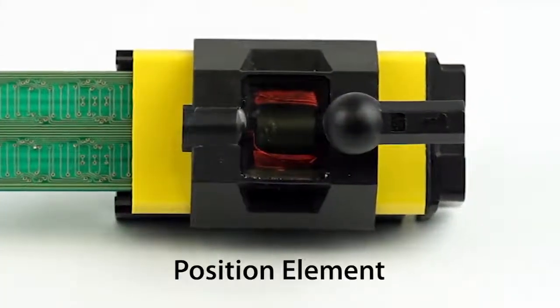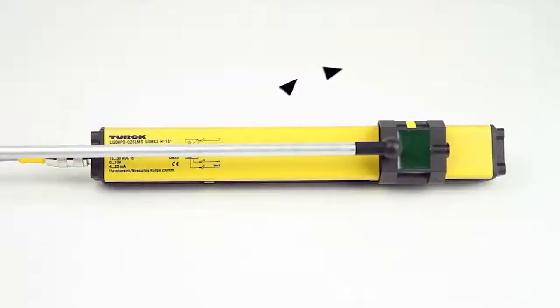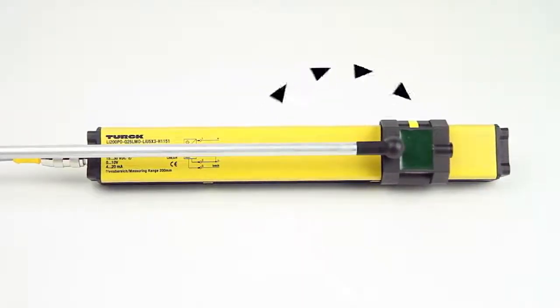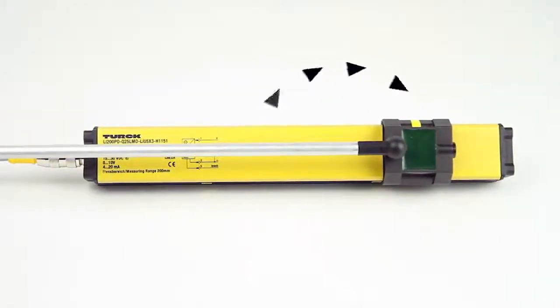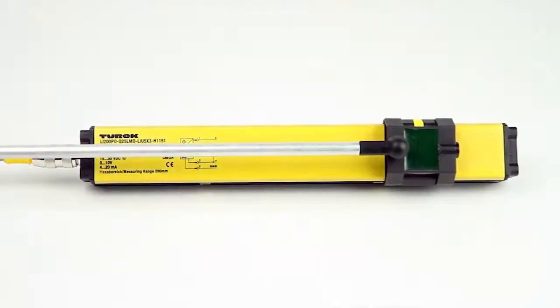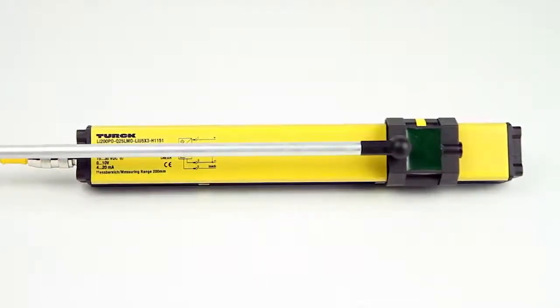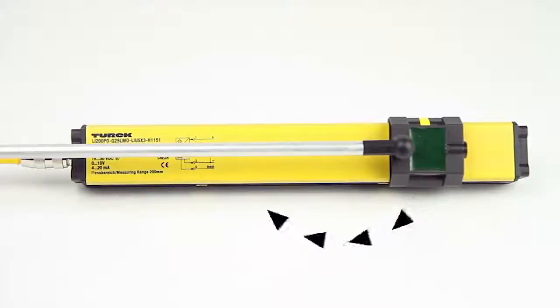The position element contains an inductor and a capacitor. First, the emitter coils are excited with a high frequency AC field which in turn charges the position element. The position element then resonates the charge into the receiver coils of the sensor.